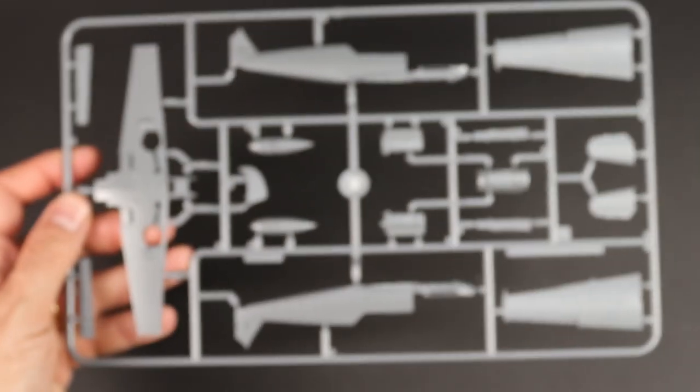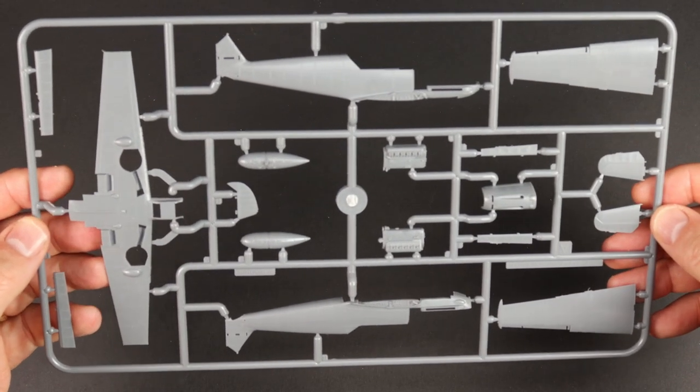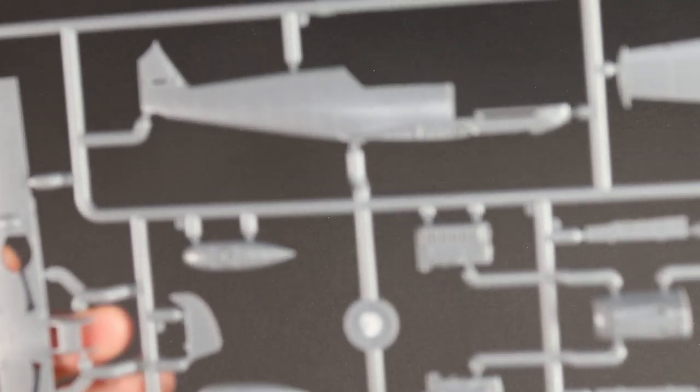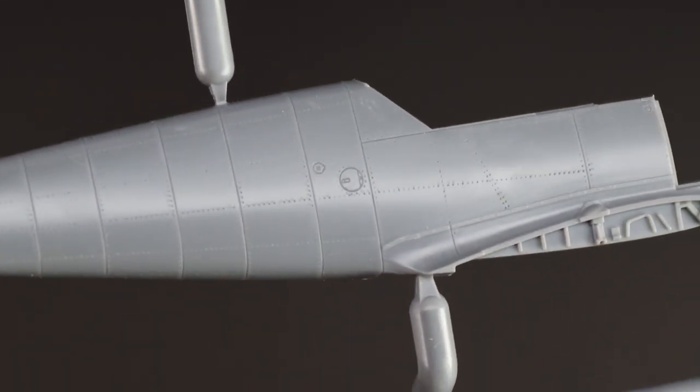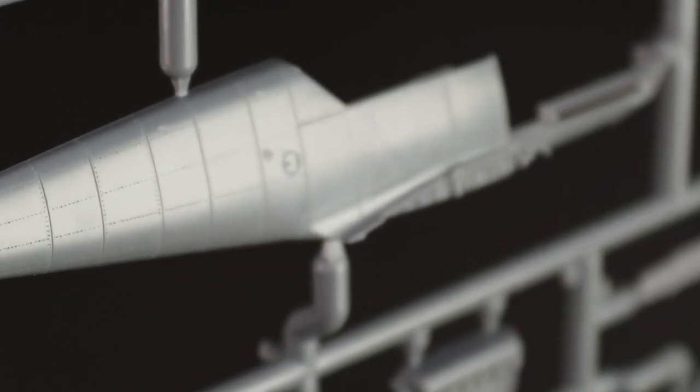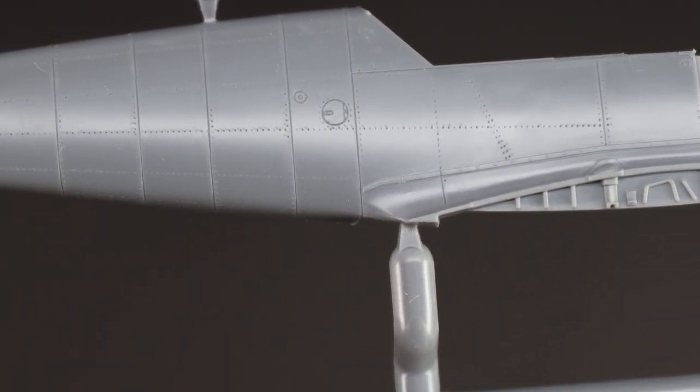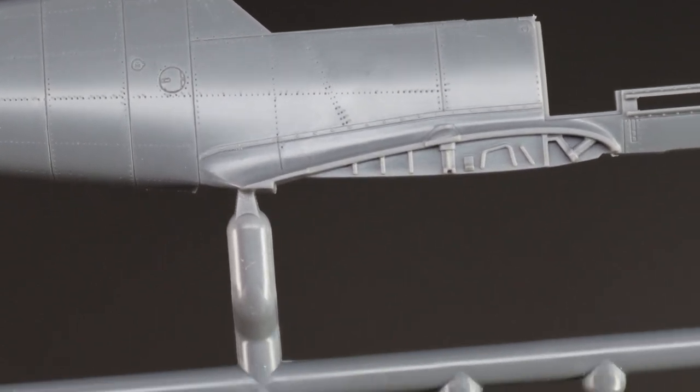Right, let's call this sprue A. So your main airframe parts and the thing that immediately will leap out at you is the surface detail. Let's focus in on here and if I bend this in the light hopefully you can see those rivets, which is even finer than the S-199 that I did recently. That is absolutely beautiful.